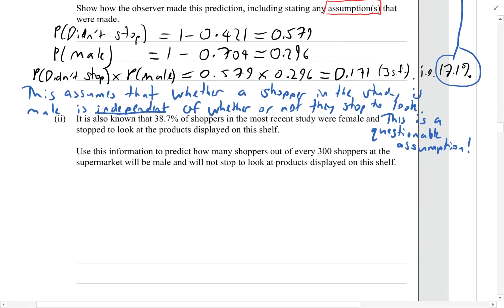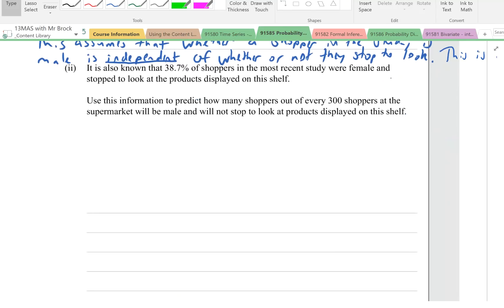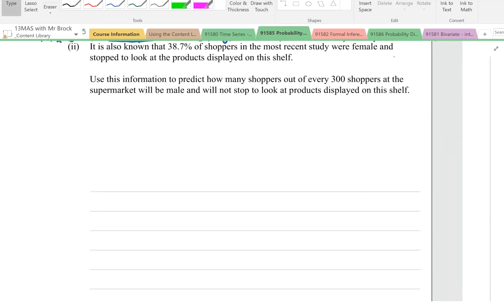On to the next question, part two. It is also known that 38.7% of the shoppers in this most recent study were female and stopped to look at the products displayed on the shelf. Use this information to predict how many shoppers out of every 300 shoppers at the supermarket will be male and will not stop to look at the products.